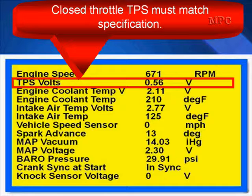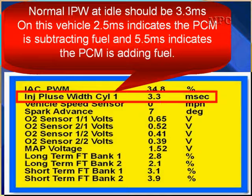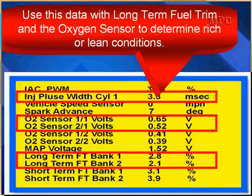Closed throttle TPS must match specifications. After the MAP, move to the TPS. Higher than normal TPS voltages could indicate the throttle stop screw has been adjusted by someone to compensate for a dirty throttle bore — if you find that, look in the throttle bore and see if it needs to be cleaned. Normal injector pulse width at idle should be 3.3 milliseconds or so. On this vehicle, 2.5 milliseconds indicates the PCM is subtracting fuel and 5.5 milliseconds indicates the PCM is adding fuel. So the specification range is 2.5 to 5.5, with 3.3 being nearly perfect. Use this data with long-term fuel trim and the oxygen sensors to determine rich or lean conditions — compare it to each other, compare it to specs.